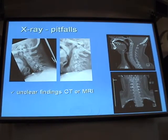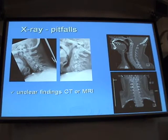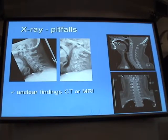On the left side of the picture, we have unexplained findings, so CT or MRI is necessary in this case. Here you can see only the upper cervical part with C1 to C5 — we cannot visualize C7 and TH1. Therefore, we perform a CT scan, as shown on the right side, without the artifact.